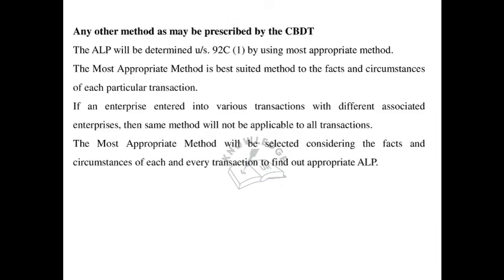Any other method as may be prescribed by the CBDT may also be used. The arm length price will be determined under Section 92C(1) by using the most appropriate method — the best suited method to the facts and circumstances of each particular transaction. If an enterprise entered into various transactions with different associated enterprises, the same method will not be applicable to all transactions. The most appropriate method will be selected after considering the facts and circumstances of each transaction.